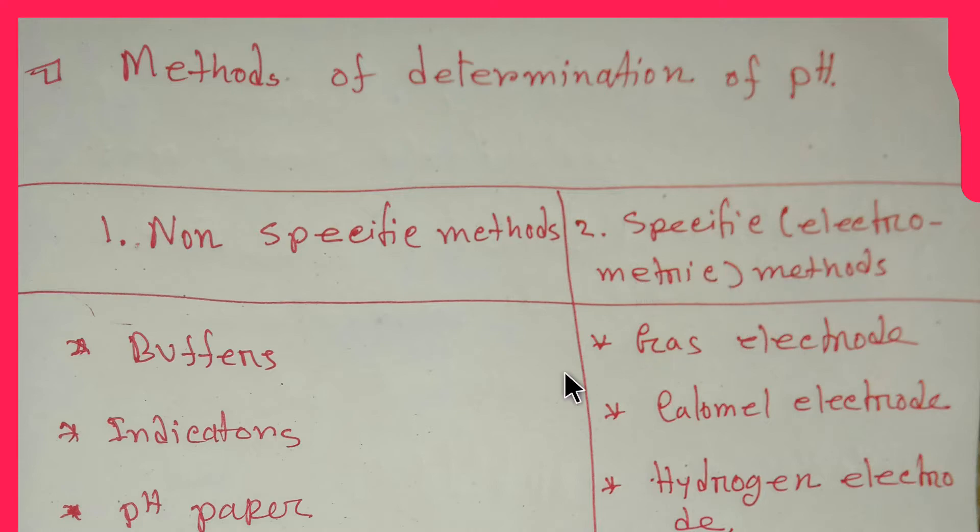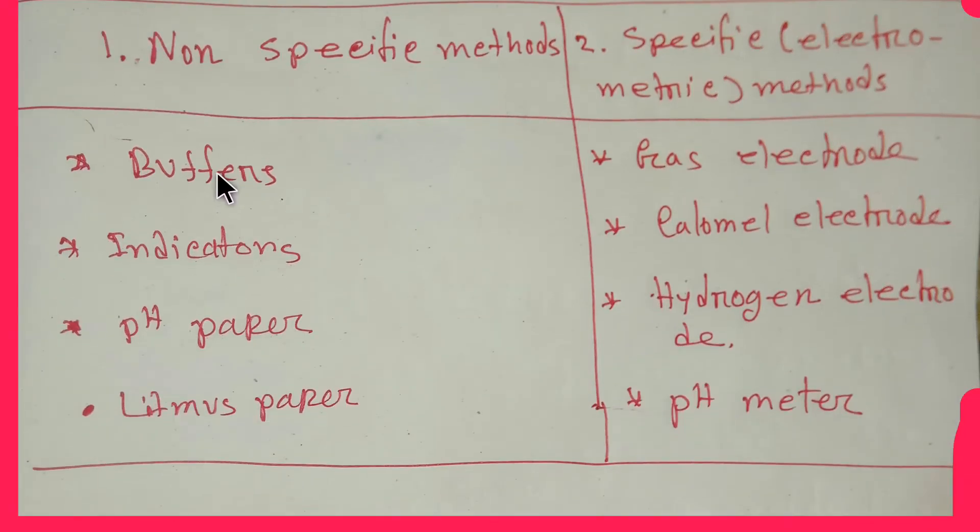So in non-specific methods we are getting buffers, indicators, pH paper, and litmus paper. And in specific or electrometric methods we are getting gas electrode, calomel electrode, hydrogen electrode, and pH meter.